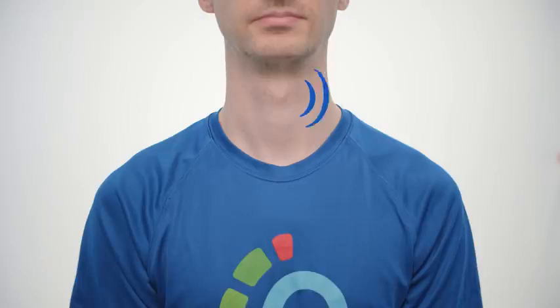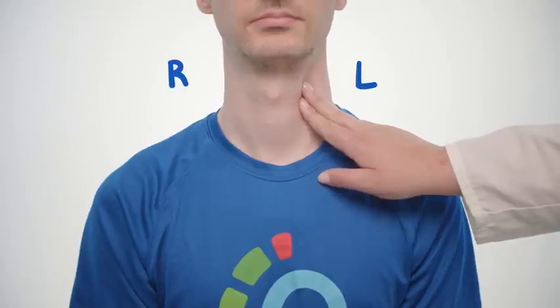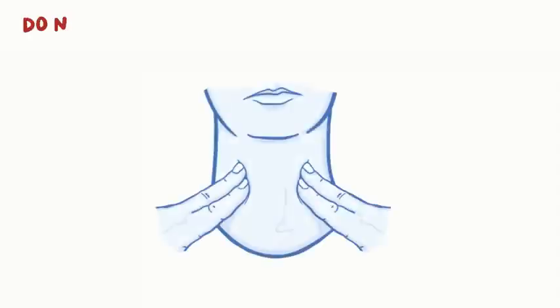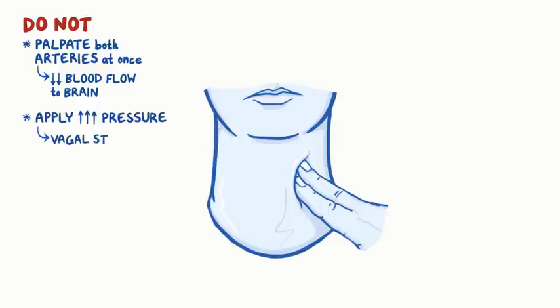Now let's take Fred's carotid pulse. The carotid pulse is also easily accessible, but we can also use it if other pulse sites are not available. First, check for obvious pulsations. Then using your first two or three fingers, gently palpate the left, then right artery between the larynx and the interior border of the sternocleidomastoid muscle. Do not palpate both arteries at once — that reduces blood flow to the brain. Also, don't apply excessive pressure, as that could cause vagal stimulation.